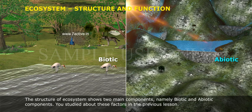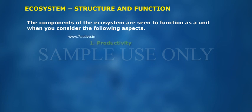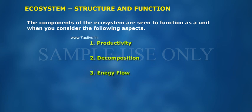You studied about these factors in the previous lesson. The components of the ecosystem are seen to function as a unit when you consider the following aspects: 1. Productivity, 2. Decomposition, 3. Energy flow, 4. Nutrient cycling.